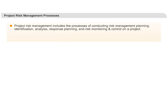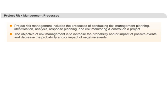Project Risk Management Processes. Project risk management can be best defined as the process of risk management planning, risk identification, risk analysis, risk response planning, and risk monitoring and control on a project. The key objective of risk management is to increase the probability and the impact of positive events and decrease the probability and impact of negative events.